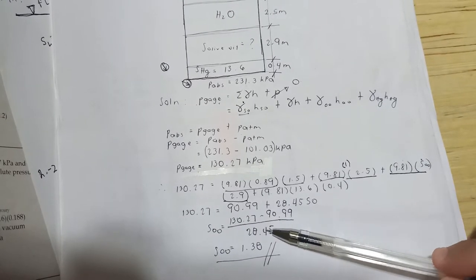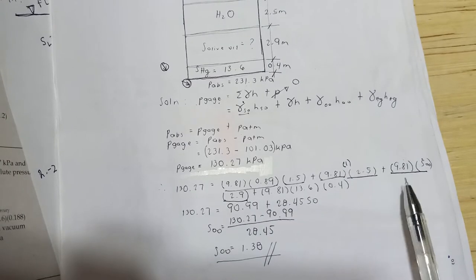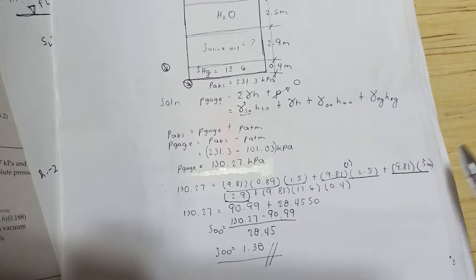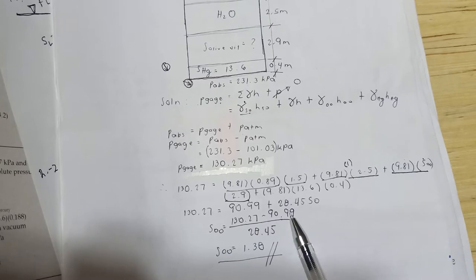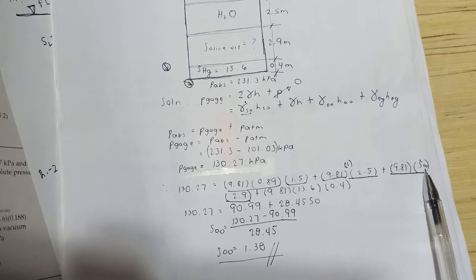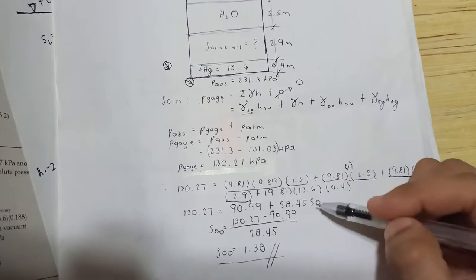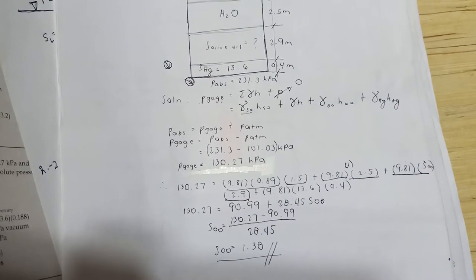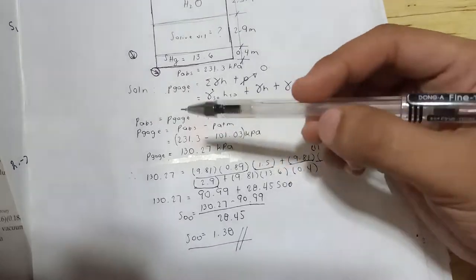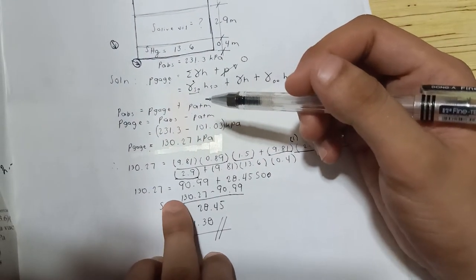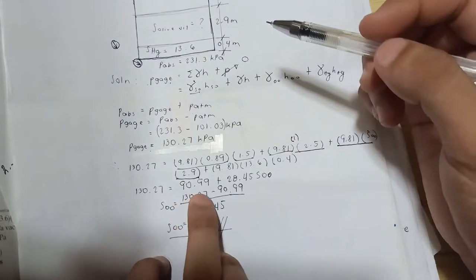Adding the known values together: 90.99 plus 9.81 times 2.29 times S_OO gives the olive oil term equal to 28.45 times S_OO. Therefore, 130.27 minus 90.99 equals 28.45 times S_OO. Dividing gives the specific gravity of olive oil.